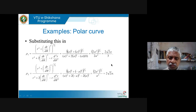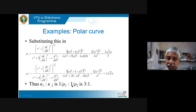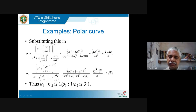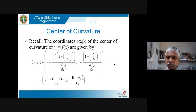We get ρ₁ = 2√2·a/3 and ρ₂ = 2√2·a. Clearly ρ₂ is larger; ρ₁ = ρ₂/3. Since curvature κ = 1/ρ, the ratio κ₁ : κ₂ = (1/ρ₁) : (1/ρ₂) = ρ₂ : ρ₁ = 3 : 1, which is what we wanted to show.